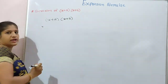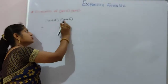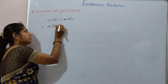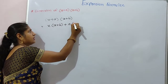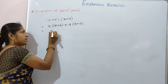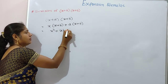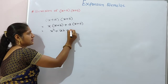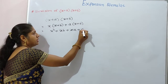For simplification, first multiply x by the next bracket: x multiplied by x plus b, plus a multiplied by x plus b. This gives x into x equals x square, plus x into b equals xb, plus a into x equals ax, plus a into b equals ab.